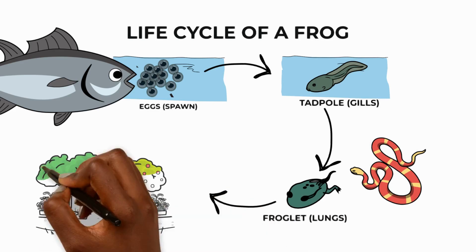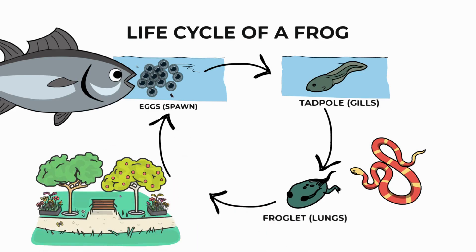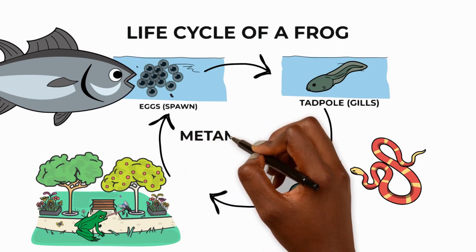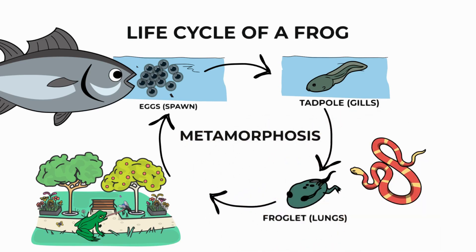But adult frogs are not completely defenceless. They're camouflaged to blend in with their surroundings. They jump quickly to avoid danger and they have good eyesight. Their sticky tongues help them catch insects and slugs. All these differences are what we call metamorphosis, a Greek word that means transformation or change in shape.